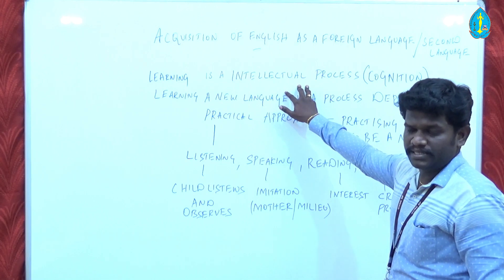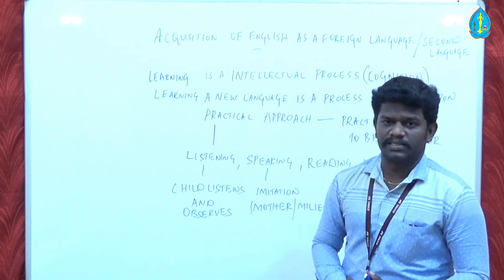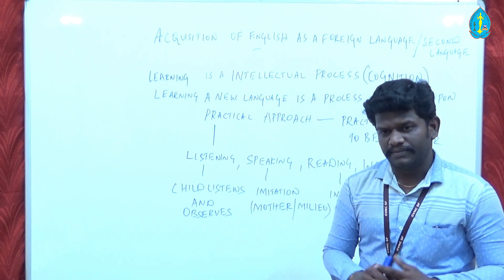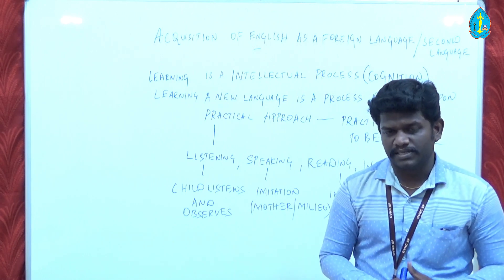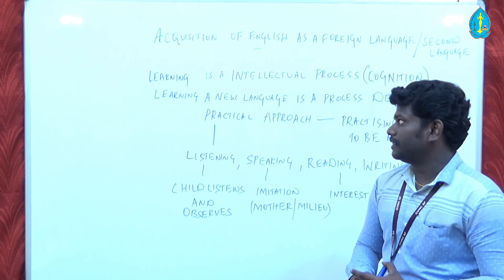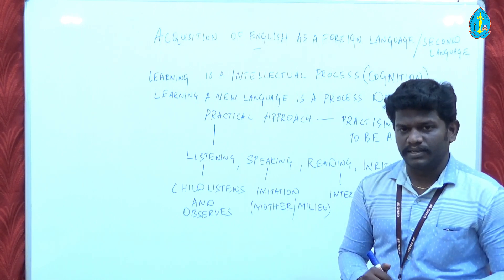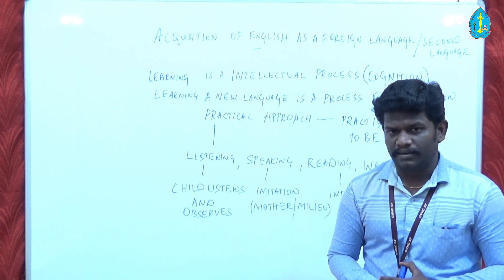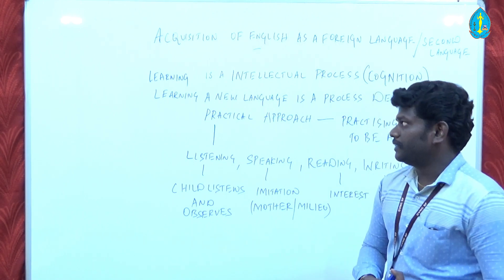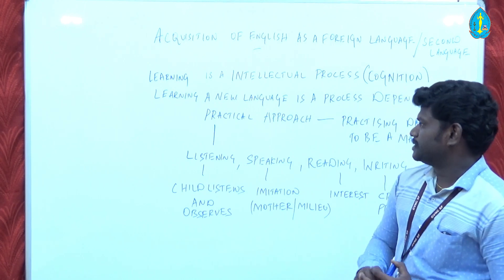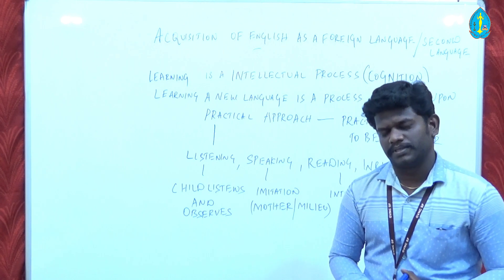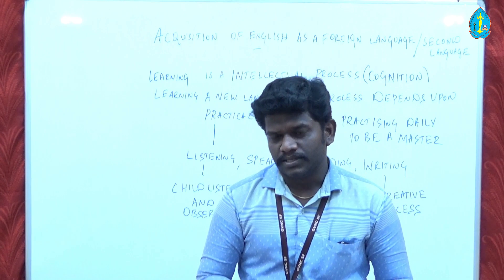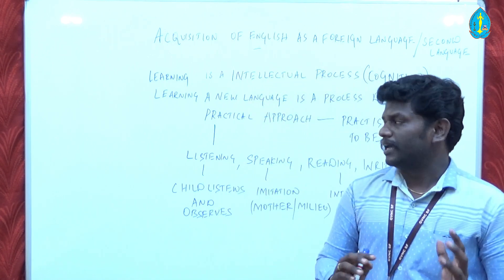There is a saying that so many people feel it very hard to speak in English. They will blabber something, they will be searching for words. How is it easy to speak English? The first thing is you have to sit and understand the concept. For that, you need an intellectual ability — you should sit and concentrate on each and every paragraph being dealt. Learning is a process that depends upon a practical approach. Practical approach is nothing but you need practice. You have to practice daily.